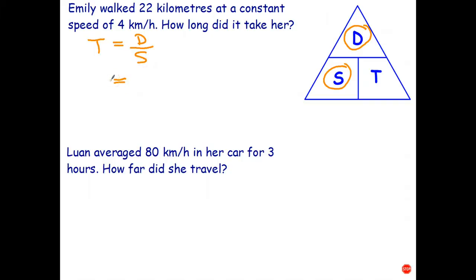So in this case, we write the 22 on top, we write the speed on the bottom, and 4 goes into 22—or 4 goes into 25 times and we have 2 fourths. So I can do that one in my head, and that's 5.5. And what we're working here is in hours—it's kilometers—so the time is going to be in hours. So it took her 5.5 hours to walk 22 kilometers.